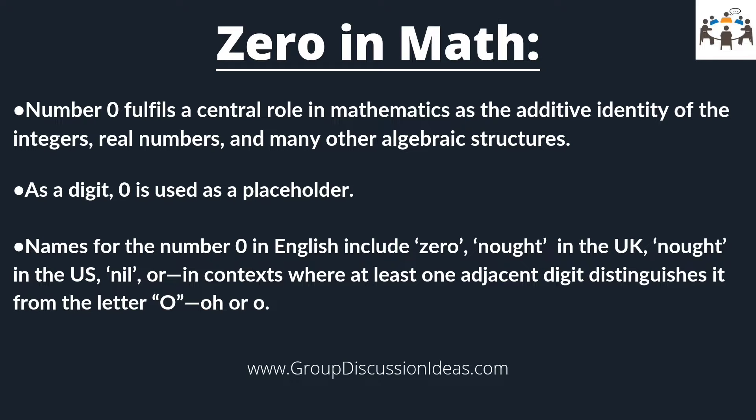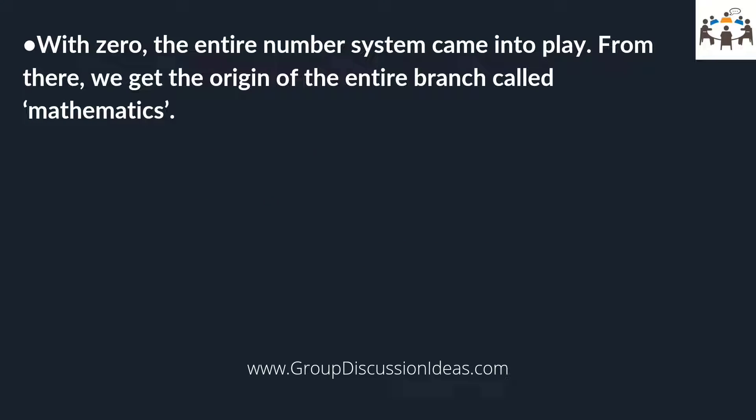Names for the number zero in English include zero, nought in the UK, nought in the US, nil, or in contexts where at least one adjacent digit distinguishes it from the letter O. With zero, the entire number system came into play, and from there we get the origin of the entire branch called mathematics. Hence, without the number zero, mathematics would never stand as strong as it is today. Maths includes the invention of all the engineered tools and modern devices to date.